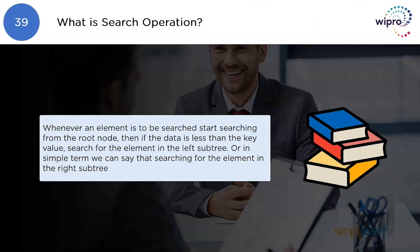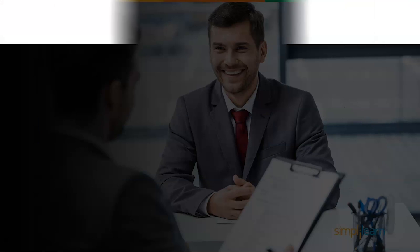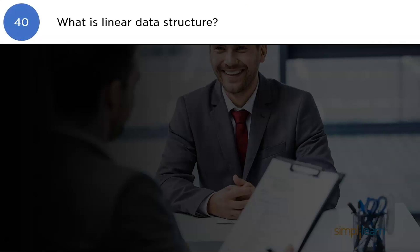What is a search operation? Whenever an element is to be searched, start searching from the root node. If the data is less than the key value, search for the element in the left subtree; otherwise, search for the element in the right subtree.